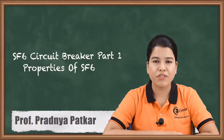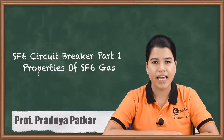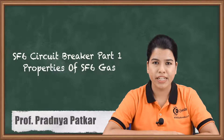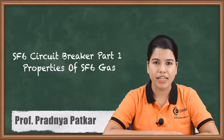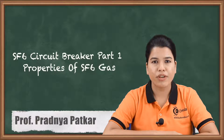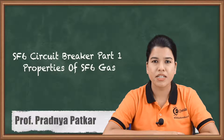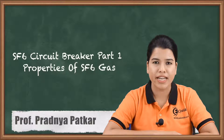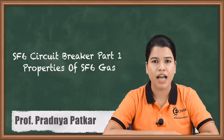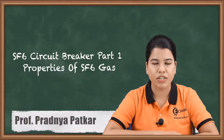Hello friends. In the previous video we studied the air brake circuit breaker, air blast circuit breaker, miniature circuit breaker, MCCB and ELCB. In this video we are going to study about the SF6 circuit breaker. The SF6 circuit breaker basically uses sulfur hexafluoride gas — SF6 gas — as the arc quenching medium. Let us study the working and operation of the SF6 circuit breaker.